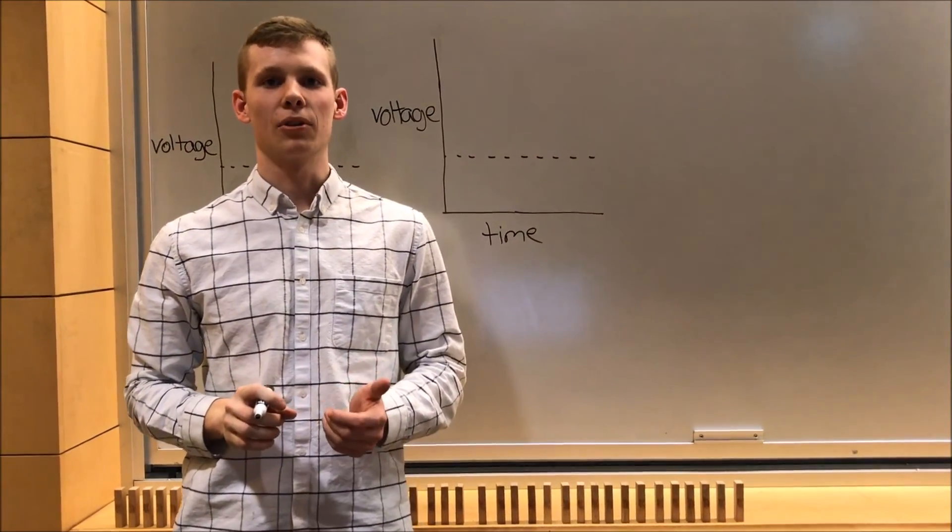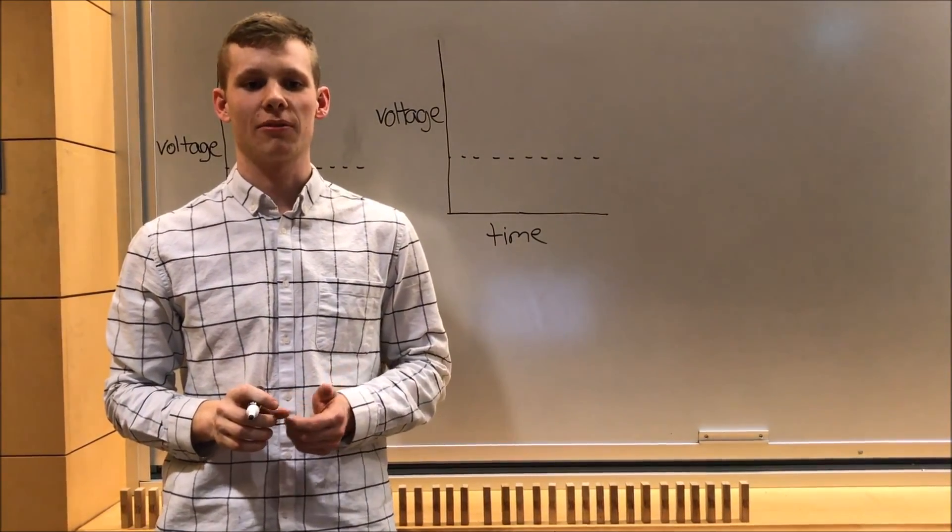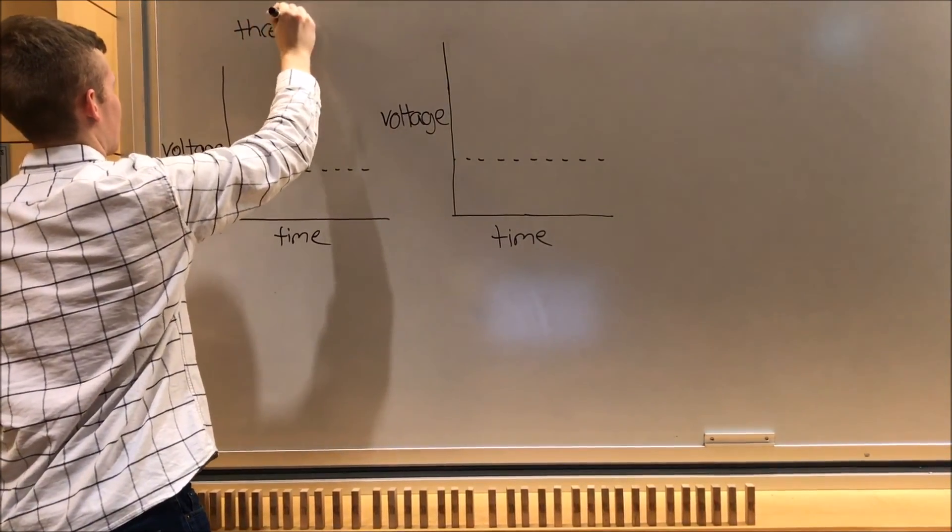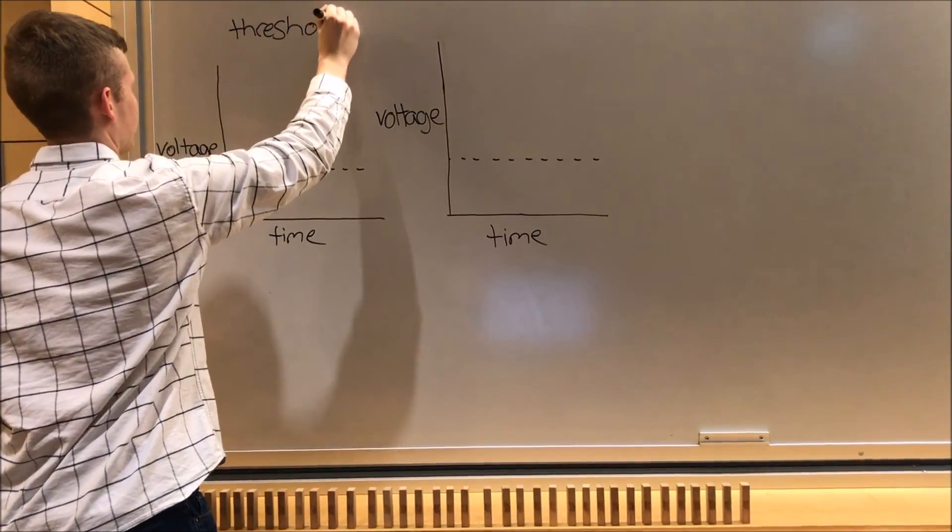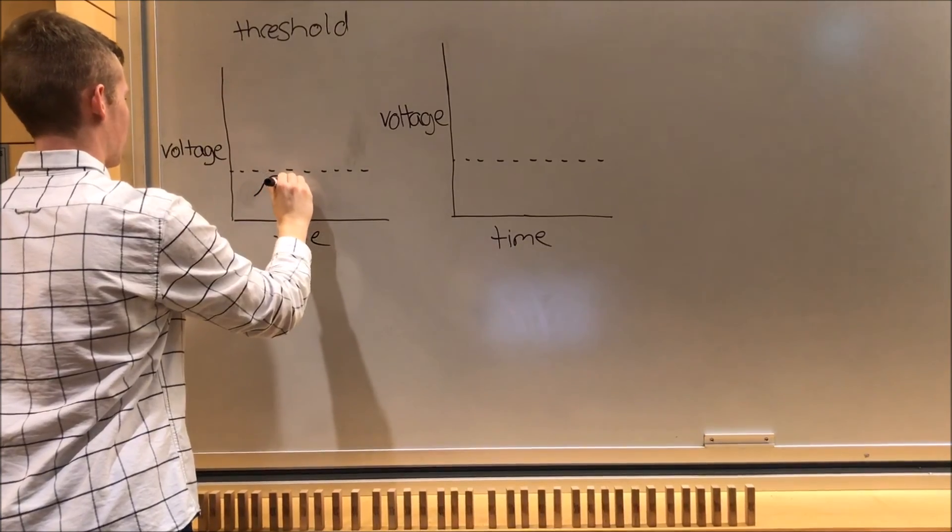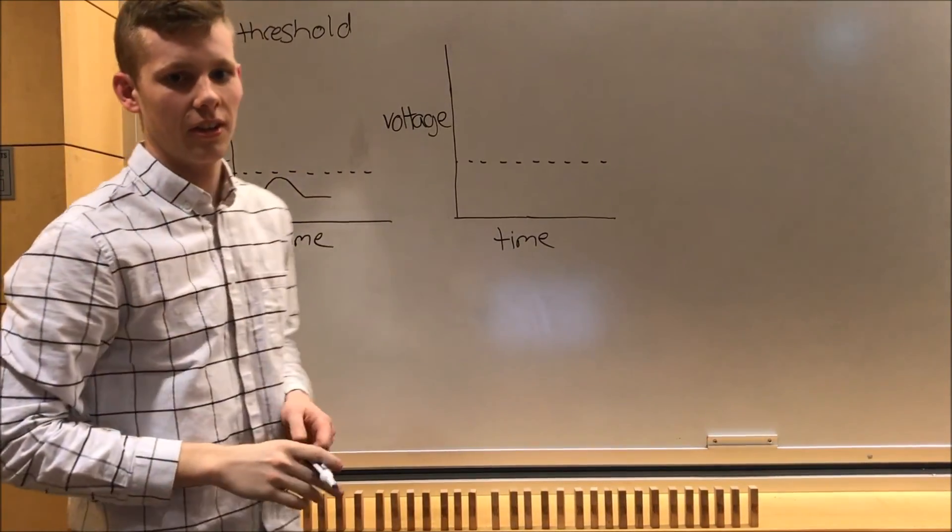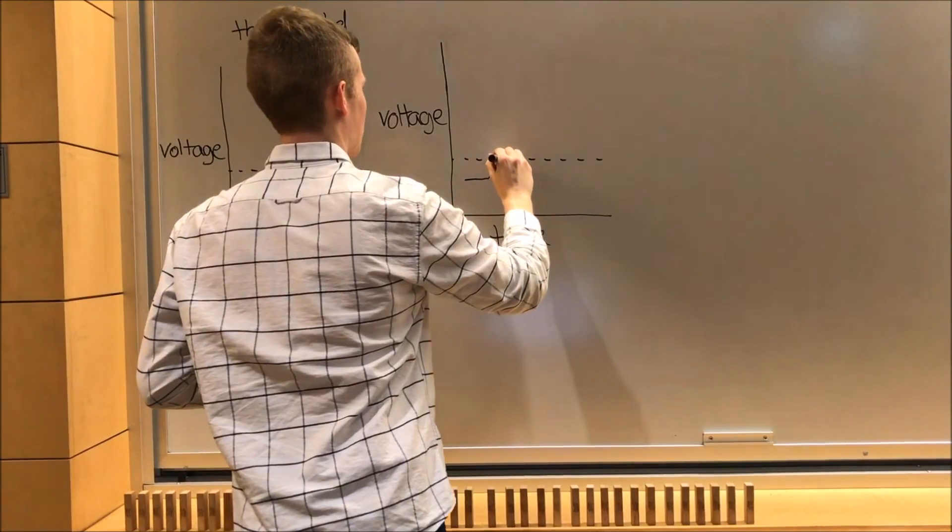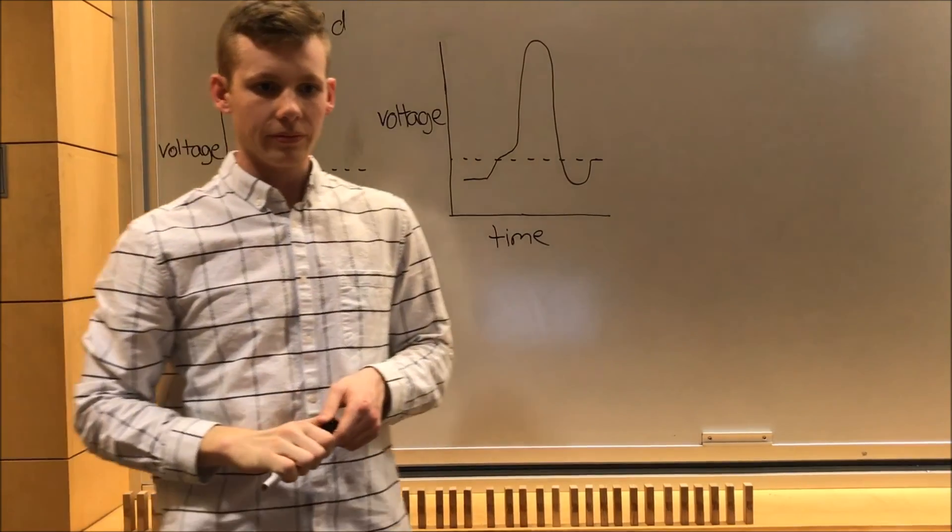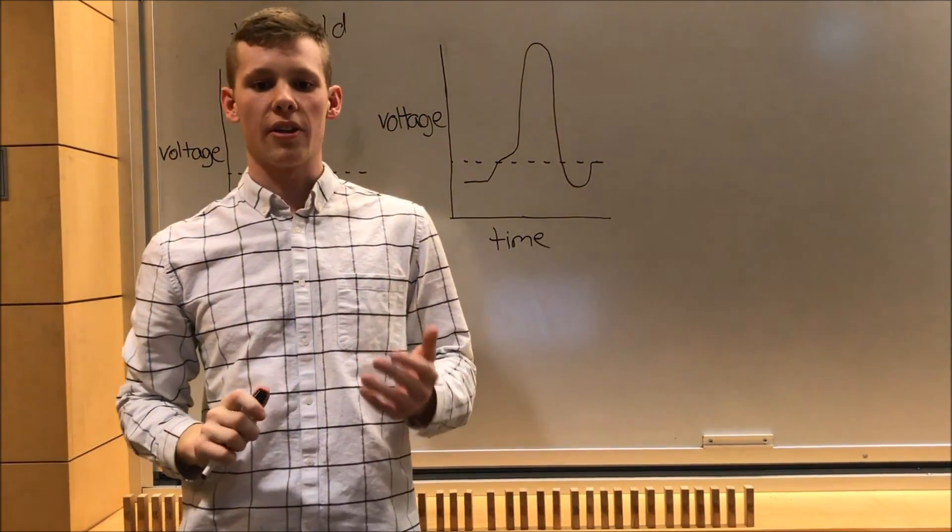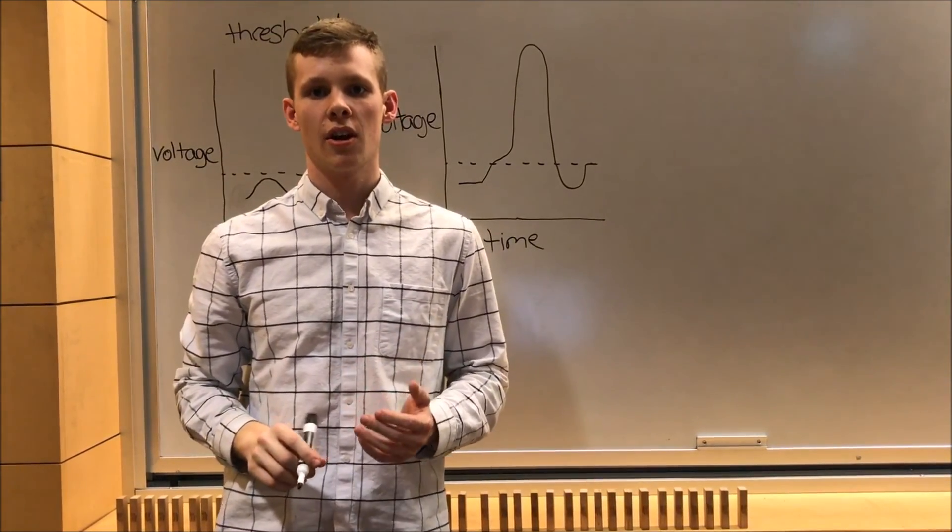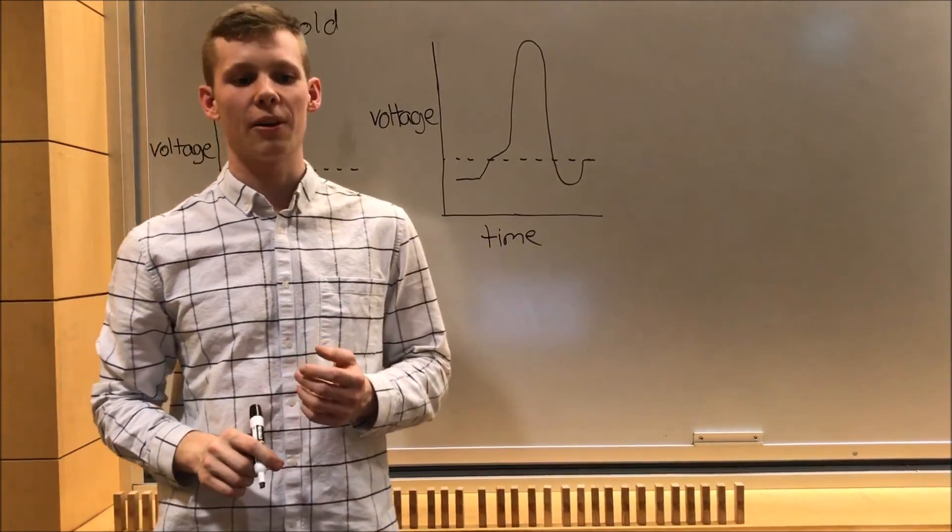Allison just showed us that membrane voltage must reach a certain value for the action potential to fire, and that number is called threshold. In this diagram, threshold is represented by the dotted line. If you don't reach this number, no action potential occurs, and it returns to rest. But if you do reach threshold, it triggers an action potential, and the same one occurs every time threshold is reached. This is called an all or nothing response. Either the entire action potential happens because threshold was reached, or no action potential happens because threshold was not reached.